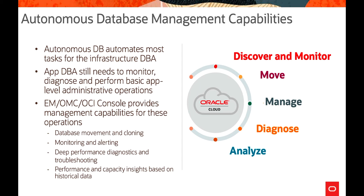Looking at the capabilities of Autonomous Database management: it is monitored by a discovery agent installed either on the customer premises or on OCI. That agent is a regular Enterprise Manager agent on a host, with SQL*Net access to autonomous databases. It provides features that an App DBA needs to monitor and diagnose performance, as well as basic application-level administrative operations. Enterprise Manager, Oracle Management Cloud, and OCI Console provide database movement, cloning, monitoring, alerting, performance diagnostics, troubleshooting, performance insight, and capacity insight based on historical data — covering the phases of analyzing, diagnosing, managing, moving, discovering, and monitoring.